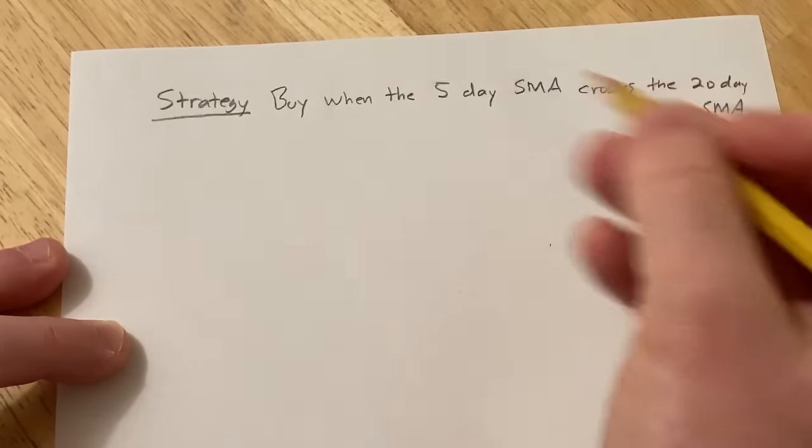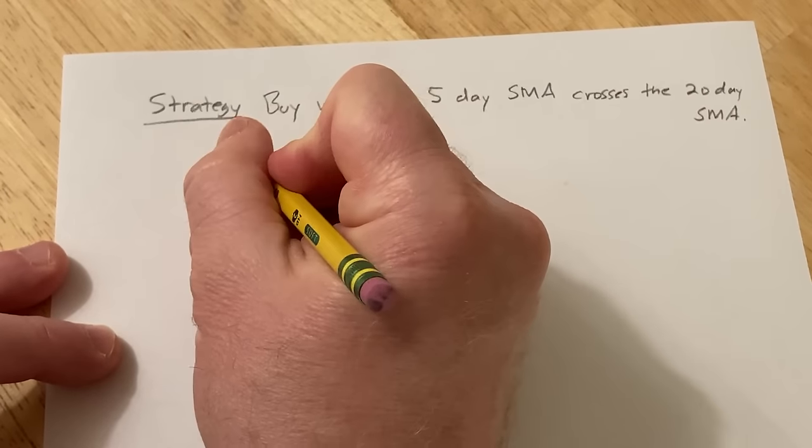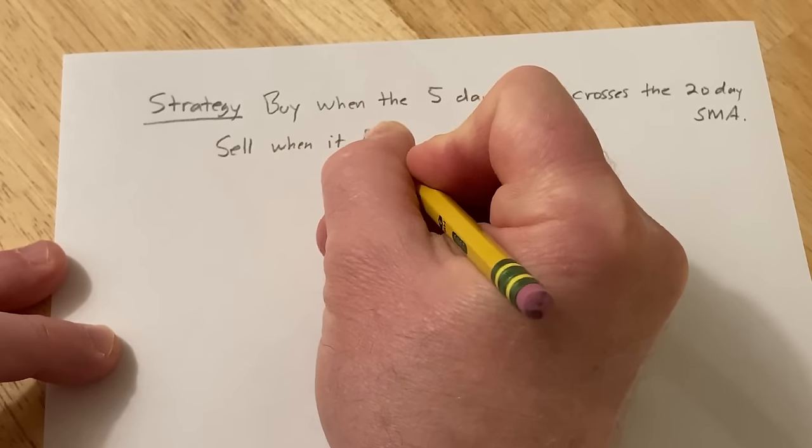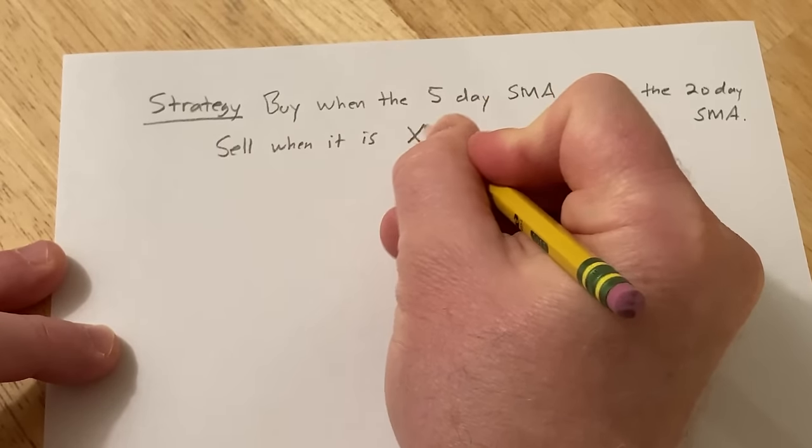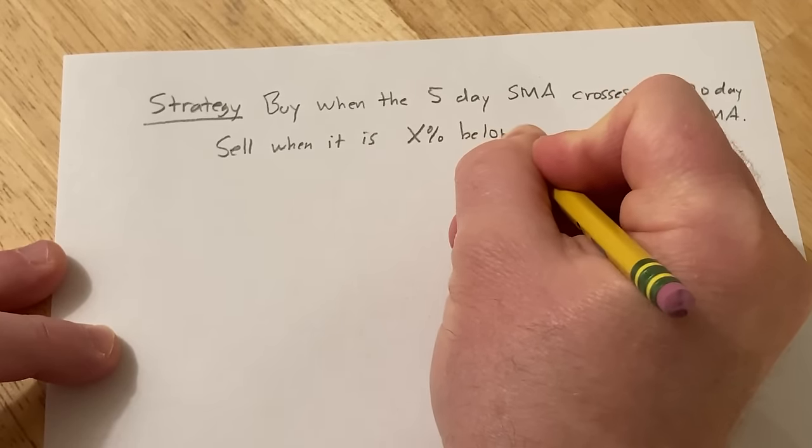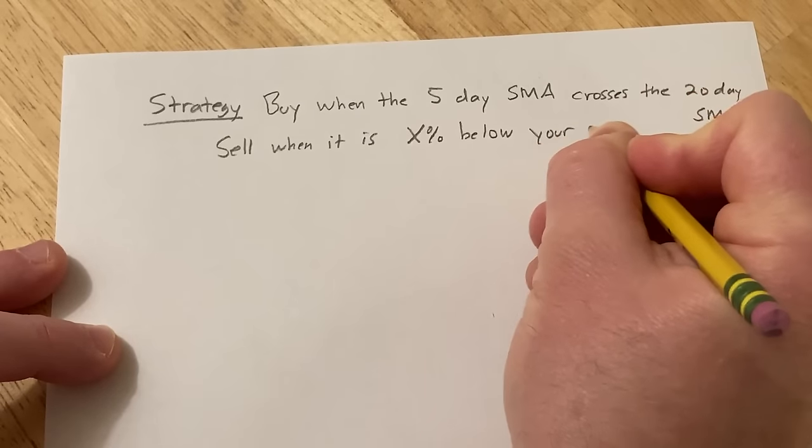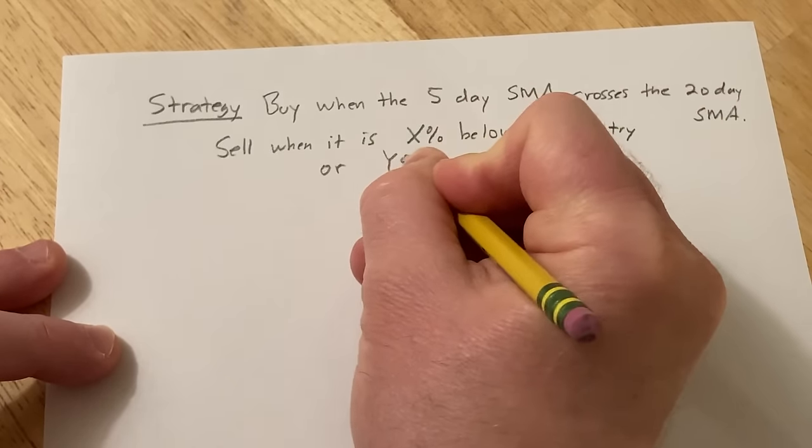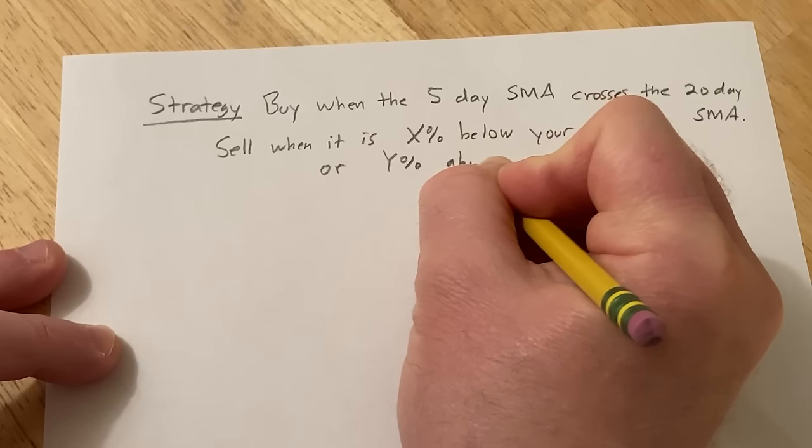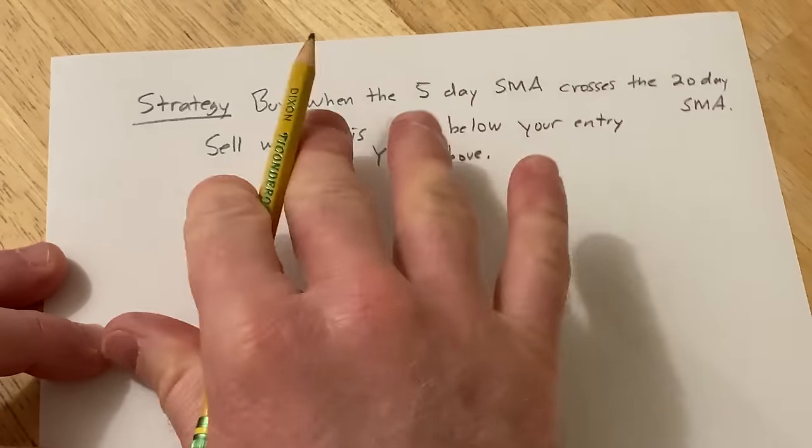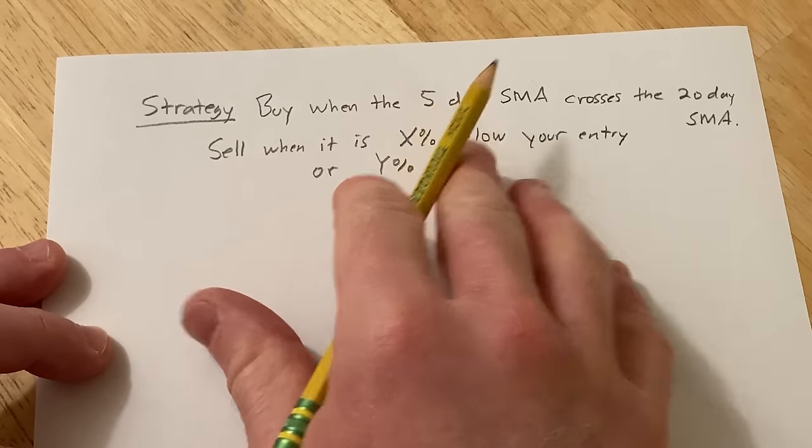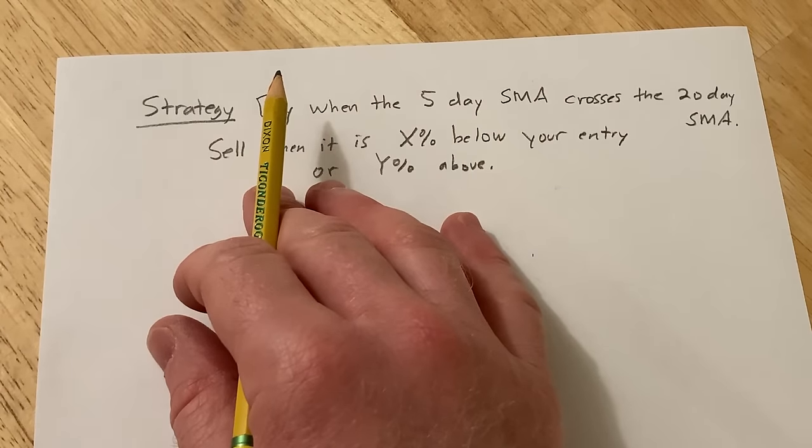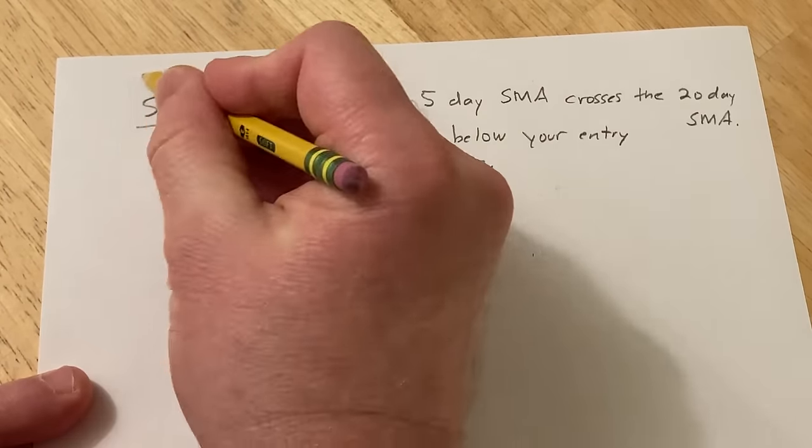Let's say that's your strategy for buying. And you're going to sell when it is X% below your entry or Y% above, whichever comes first. So you have a clearly defined entry and exit point for your strategy. Let's also assume that you're trading the same amount of money every time just to try to keep everything as constant as possible.